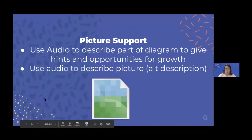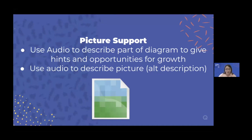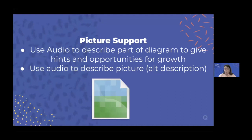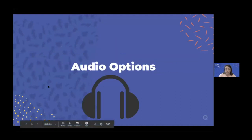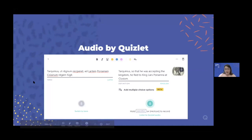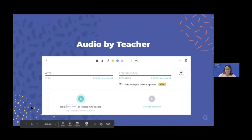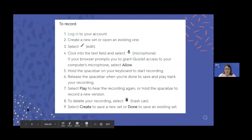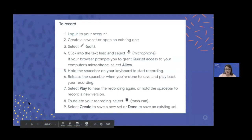Now let's talk about auditory support. You can use audio to describe a part of the diagram and give hints and opportunities for growth — if someone might be struggling, you can offer hints through the description. You can also use audio for an alternative text description of a picture. Audio options include audio by Quizlet or audio by the teacher. It's really simple to record in Quizlet — you give it permission and then press the space bar.